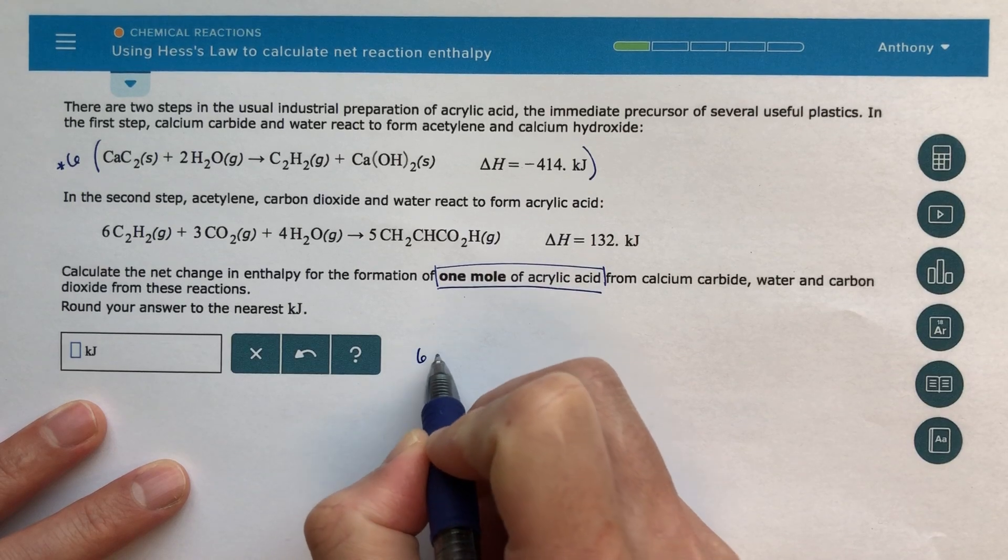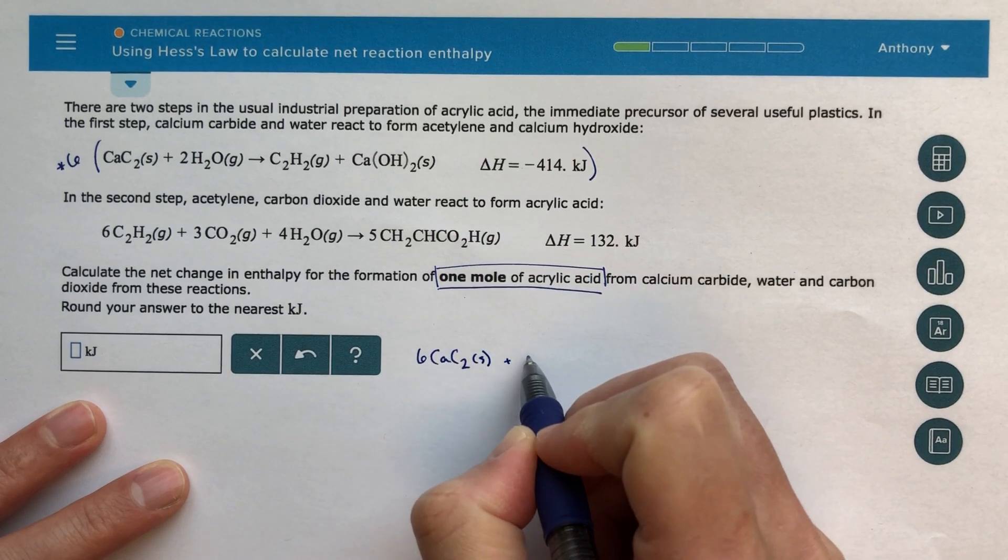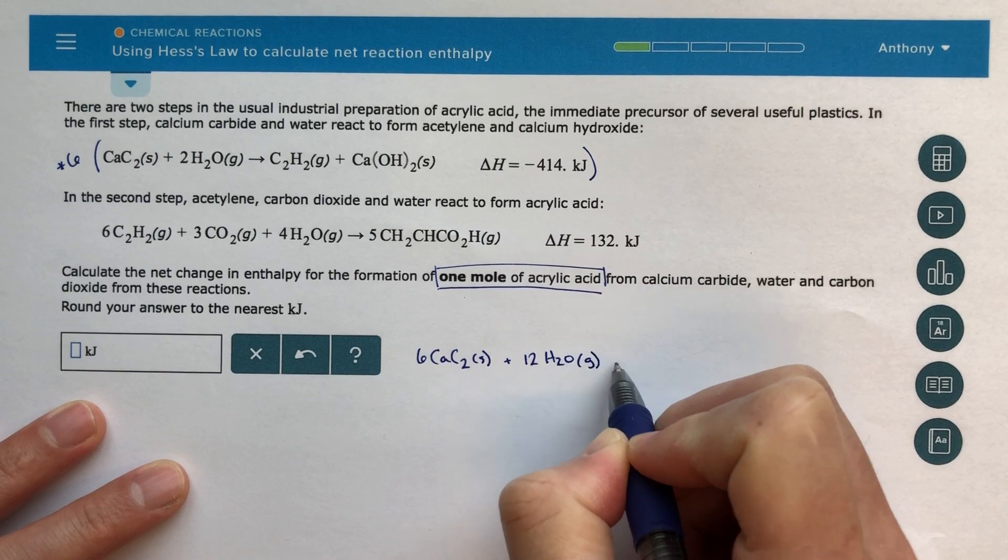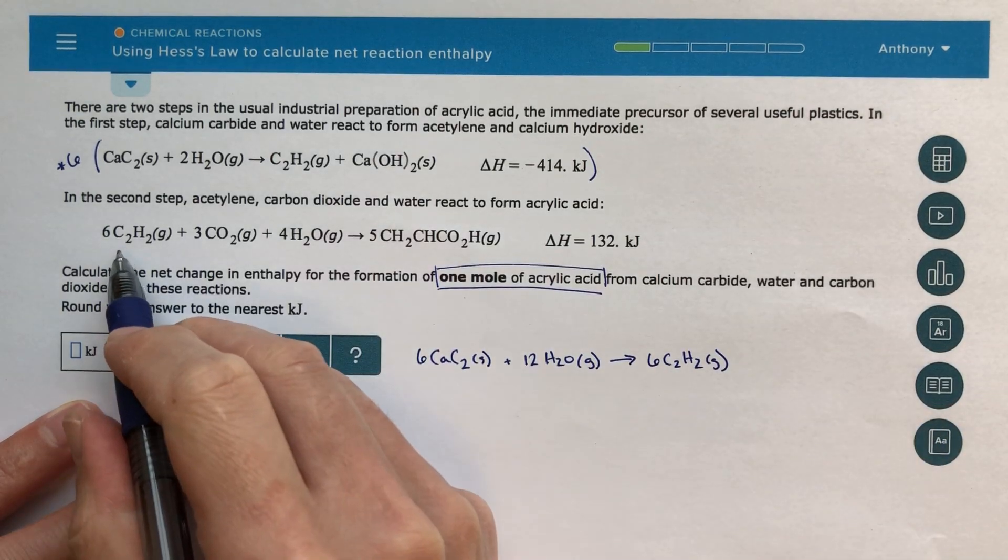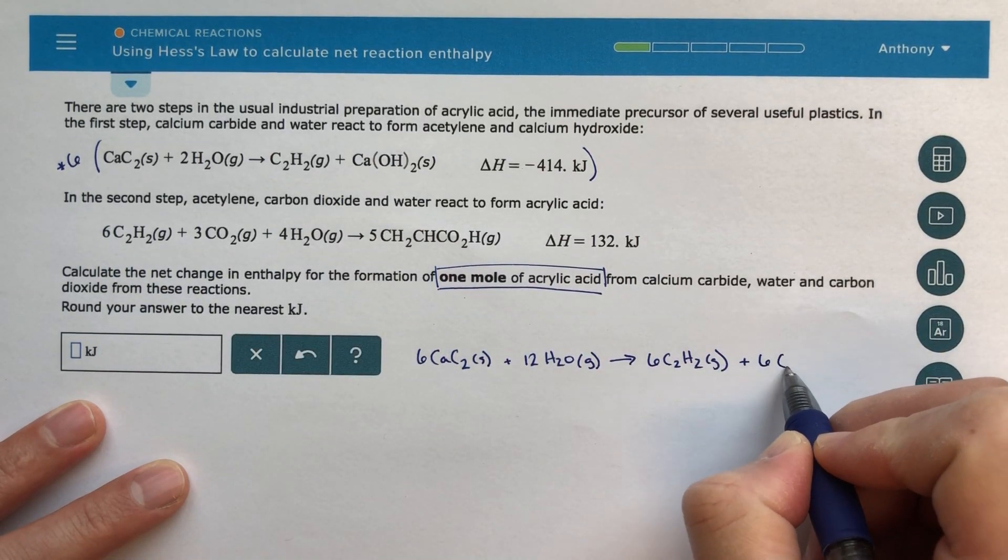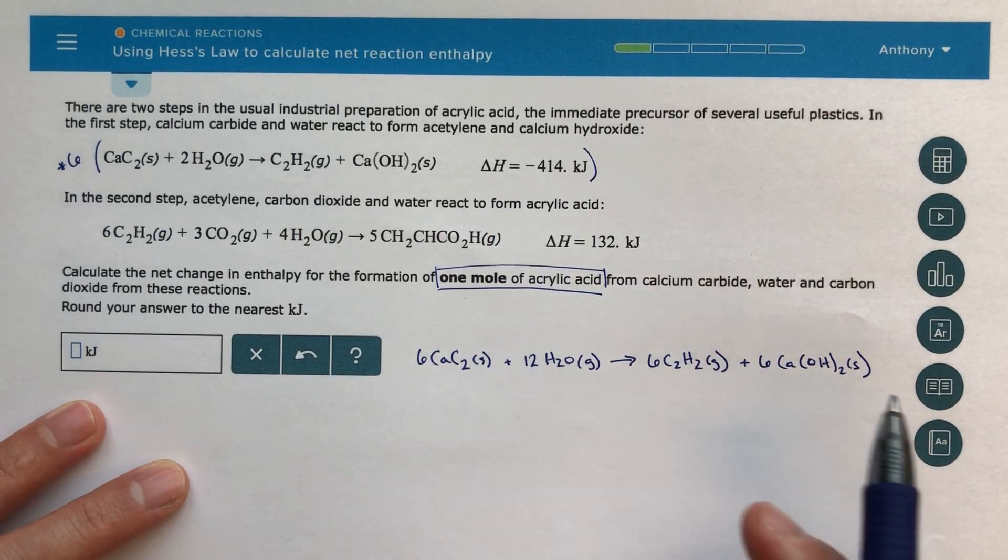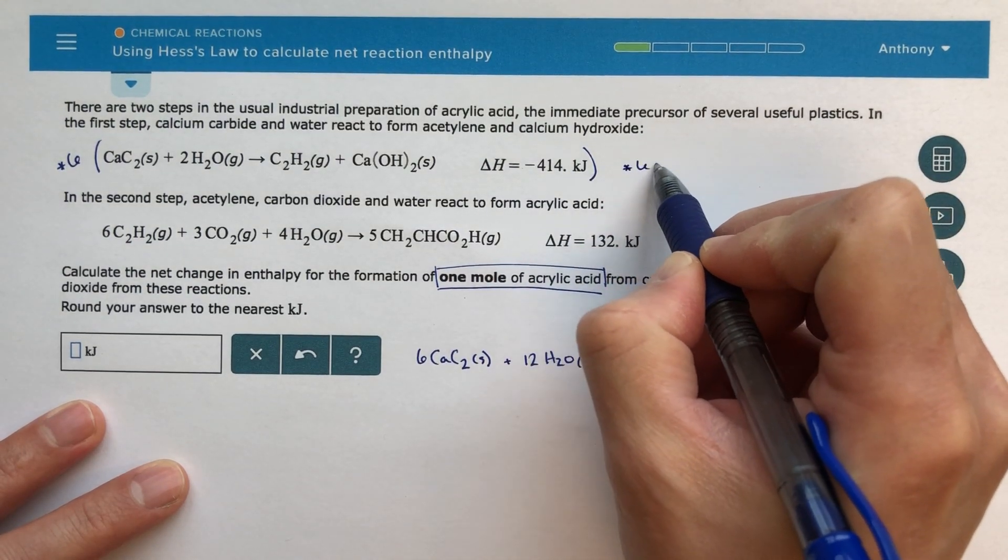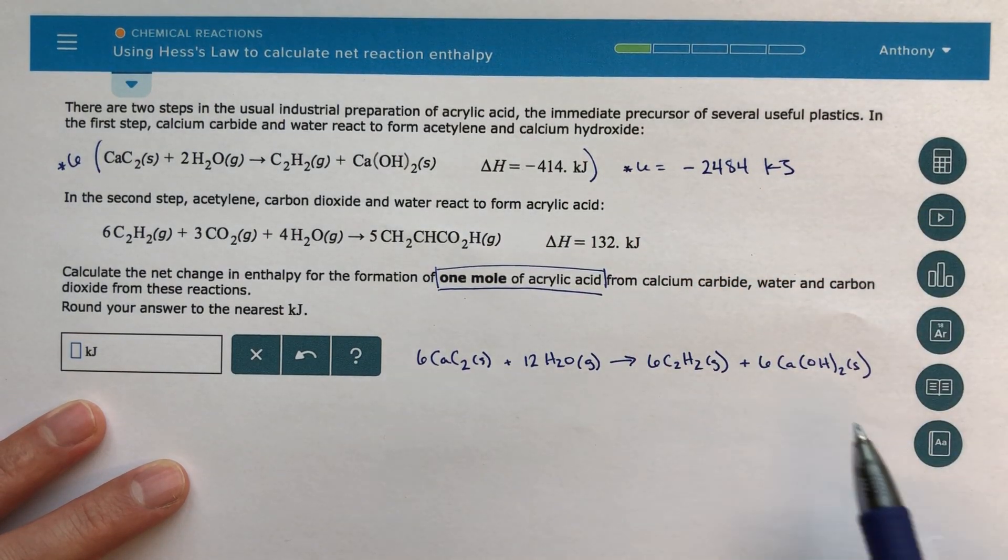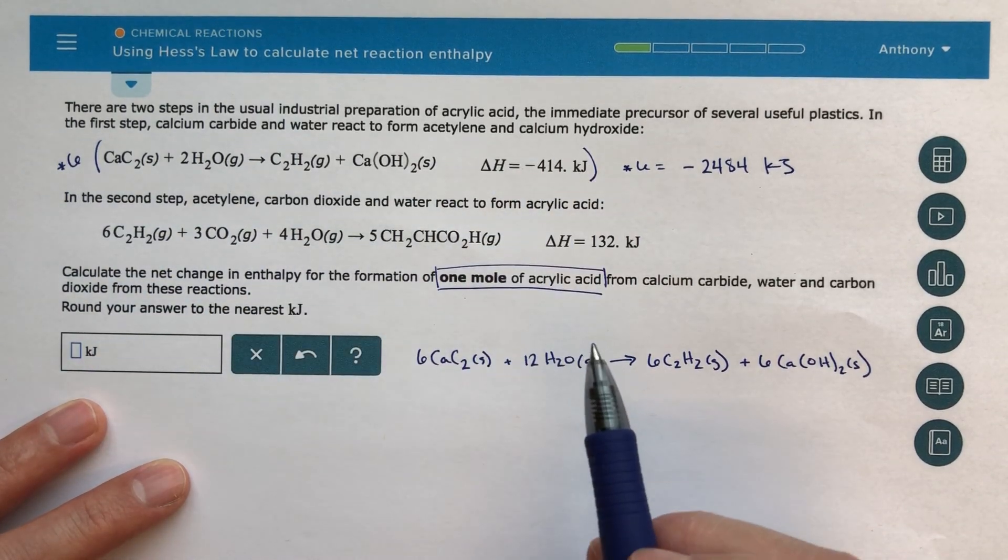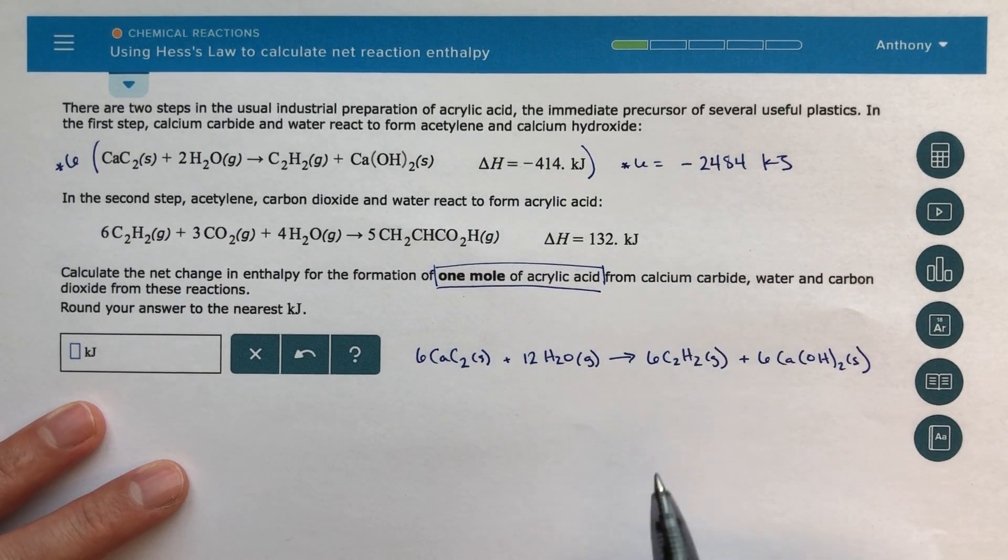So let's write that down here. Six calcium carbide plus 12 H2O gas is going to go to six C2H2 acetylene, which is good because that's going to cancel out here in our next step, plus six calcium hydroxide solid. Now our delta H, we're going to also multiply that by six. So if you multiply this by six times six equals minus 2484 kilojoules. So if I multiply the reaction by six, I'm going to multiply the delta H as well by the same factor. So the new delta H for this reaction really is this minus 2484 kilojoules.